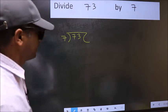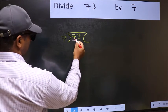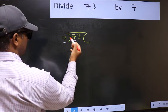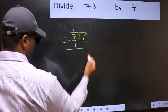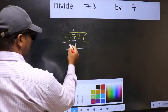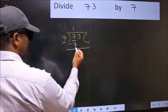Next, here we have 7 and here also 7. When do we get 7 in the 7 table? 7 once is 7. Now subtract: 7 minus 7 equals 0.